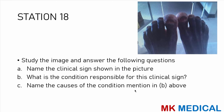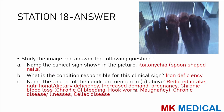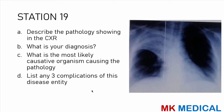Station 18: the image shows koilonychia — spoon-shaped nails, seen in iron deficiency. Causes of iron deficiency include reduced intake such as nutritional and dietary deficiencies, increased demand for example in pregnancy, chronic blood loss such as chronic GI bleeding, hookworm infestations, malignancies, chronic diseases, and conditions such as celiac disease.